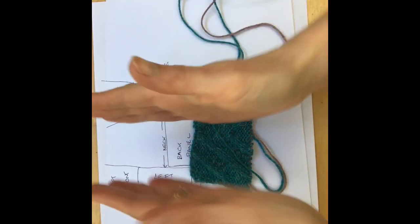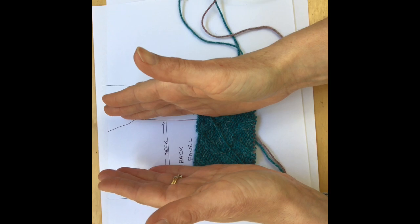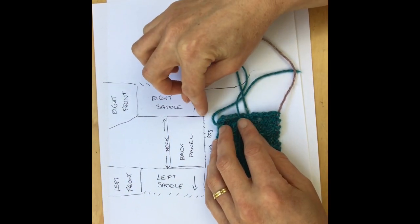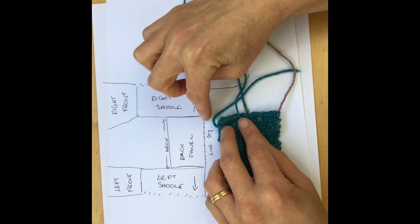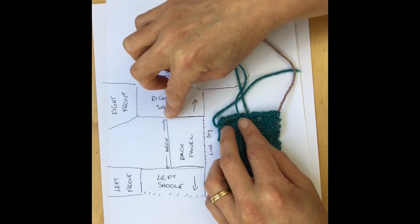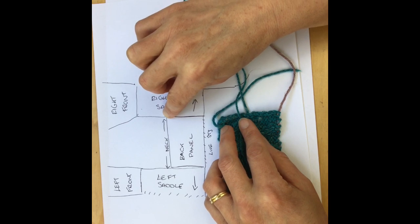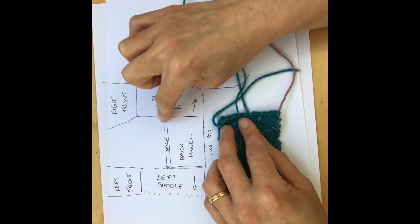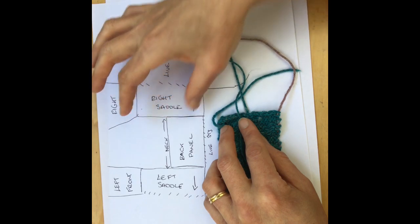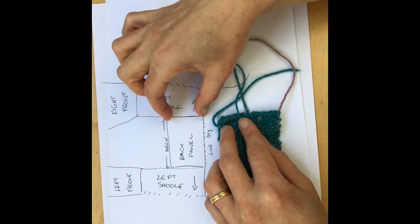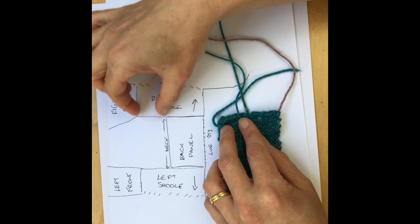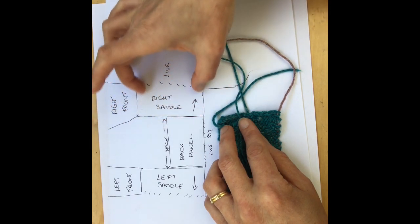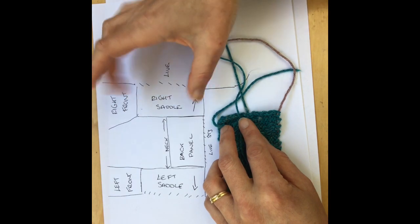Now this is going to form the very beginning of this section here. From this point, what you're going to do is first of all on the right saddle pick up stitches here across this side, and then you will cast on when you turn around onto the wrong side row the second half here. So you've got half of the stitches picked up from the back panel and half of them cast on here to the second half. So that will be the full width of the right saddle.